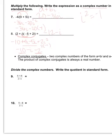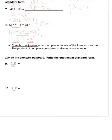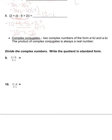A complex conjugate: when you have a complex number of the form a plus bi, its conjugate is a minus bi. It's similar to when we had 2 plus the square root of 5 — the conjugate was 2 minus the square root of 5. You're just changing the operation between the two terms.